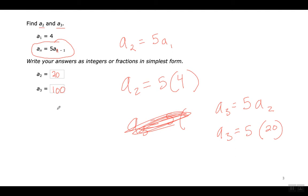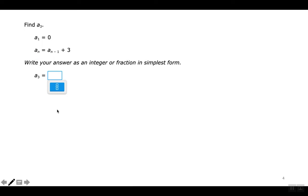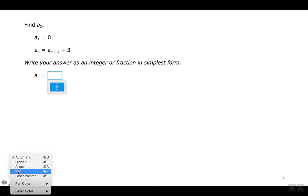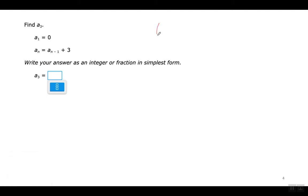Let's go on to the next one. Whenever it says A sub N minus 1, that means the previous term. So you're just getting the previous term and adding 3 to it. A1 is 0, A2 is going to be 3. It says find A3 — we've got to find the third term.